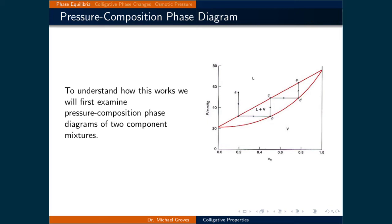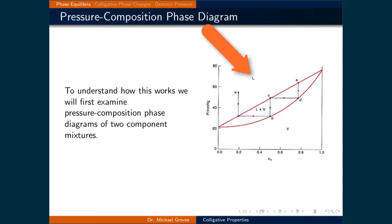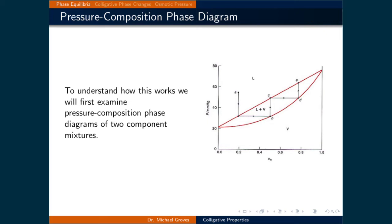An example of this type of phase diagram is illustrated on the right with an indicated pathway for fractional distillation. This is a pressure versus mole fraction phase diagram. Notice that there are three phases: a liquid phase, a mixed liquid-vapor phase, and a vapor phase. At high pressures only the liquid phase exists. As the pressure drops the vapor phase can form over the liquid, and as the pressure drops further the mixture completely vaporizes. There are two phase boundaries and we will now discuss how both are drawn.